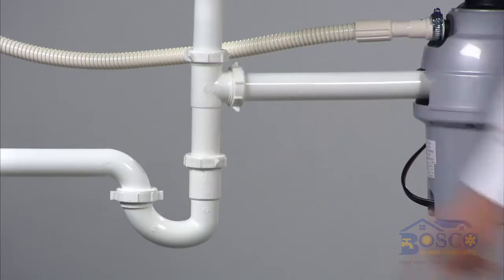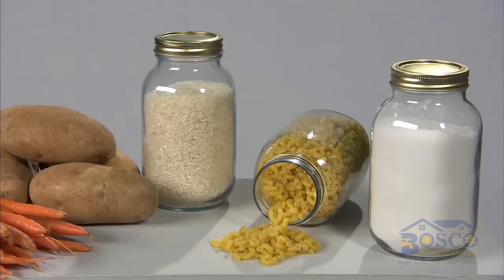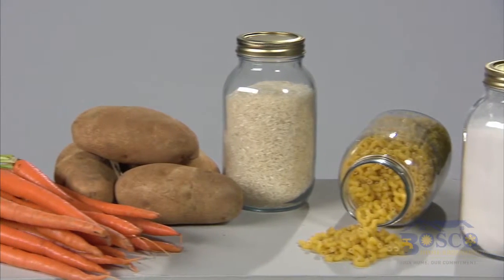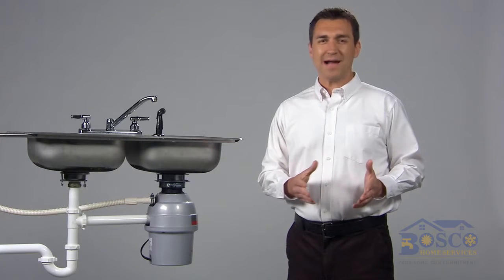Finally, don't put flour, pasta, rice, and potato or vegetable peels down your disposal. These kinds of foods bind together and clog your pipes. Here's one more quick tip to avoid a garbage disposal backup.